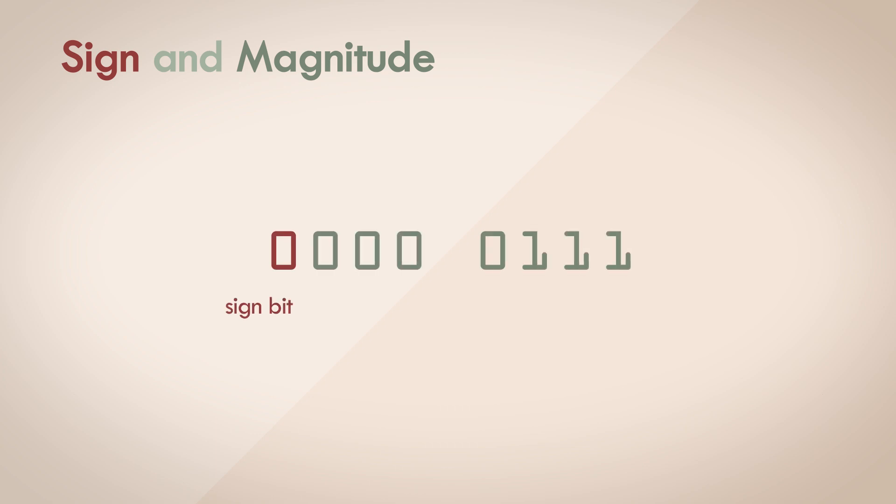The next representation model that I hinted at was the magnitude and sign representation. One of the bits, usually the leftmost bit, is used to represent the sign of the number. And the rest of the bits are used to represent the magnitude of the number. Take the example of the number 7 in an 8 bit representation. The value in binary is 00000111. Now according to this model, negative 7 is just flipping the leftmost bit, 10000111.